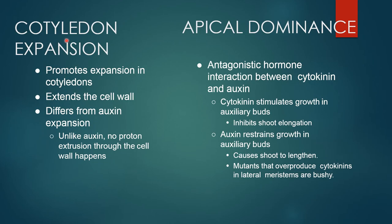Cotyledon expansion: cytokinin promotes expansion of cotyledon and extends the cell wall. This differs from auxin expansion — unlike auxin, no proton extrusion through the cell wall happens.